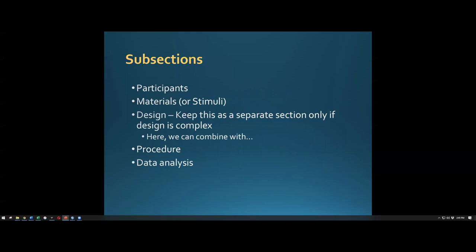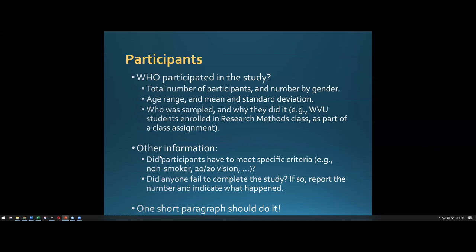Within a method section, we should see five different things — pretty much the same across any psychology paper: participants, materials or stimuli/measures, design, procedure, and data analysis. For our correlational study, design and procedure are combined into one section. If you were doing an experimental study, you would separate them.